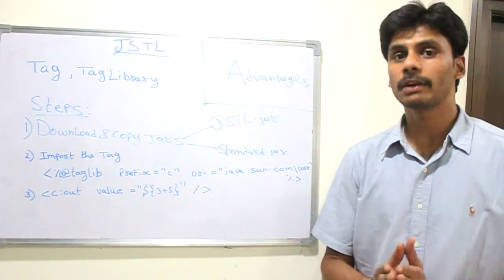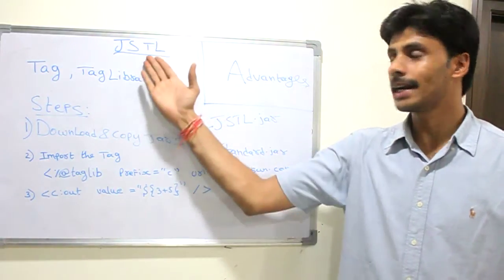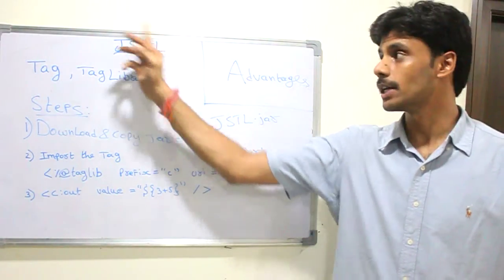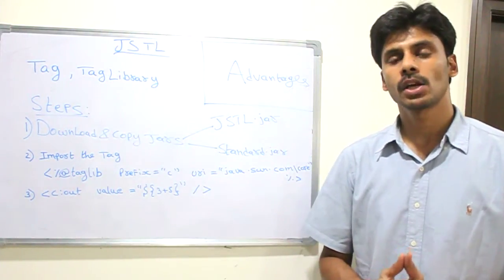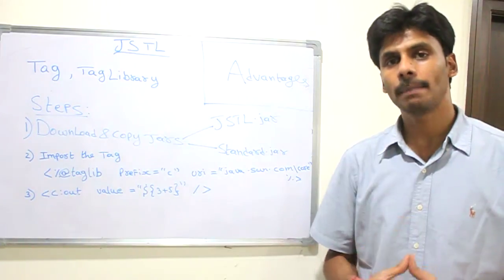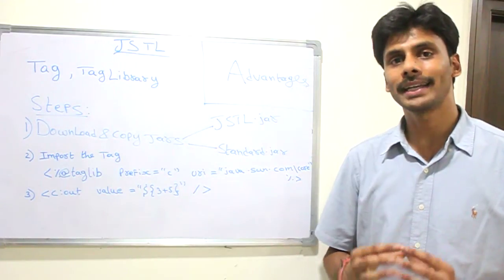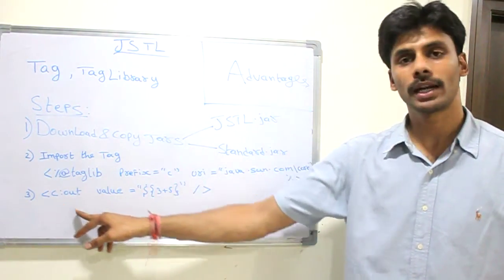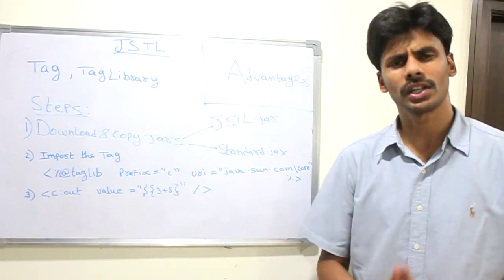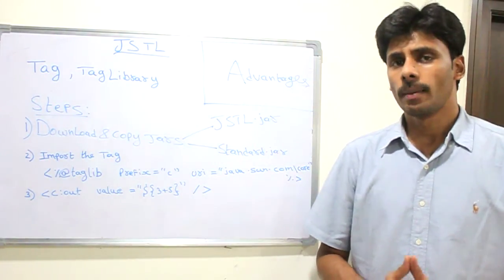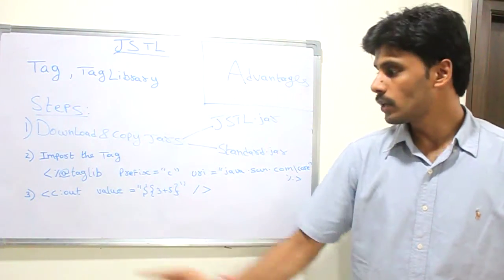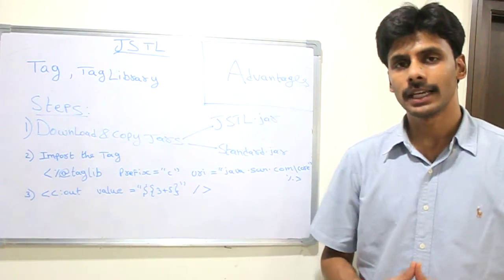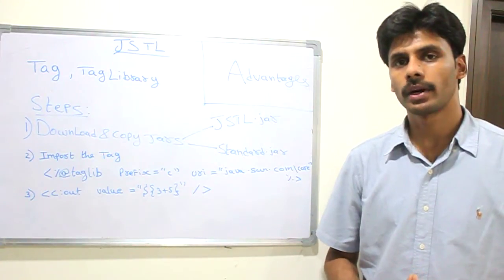You can create your own tags or use the standard tags provided by Sun Microsystems. JSTL is a collection of tags which help us write output back to the browser using very simple tags. It provides logical tags and a lot of other tags, but we mostly use the core tags available in the JSTL tag library.